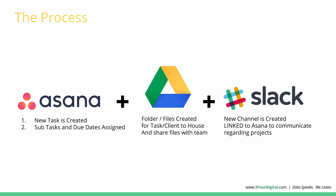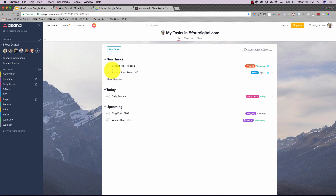Once the Google Drive folder is set up, we place it in the client area, share content with the web developer or copywriter, and create subfolders for images and copy. Then the third step: we create a Slack channel for that project, link it to Asana, so the web dev team and copywriter can communicate in real time. This avoids email overload and keeps everything organized.